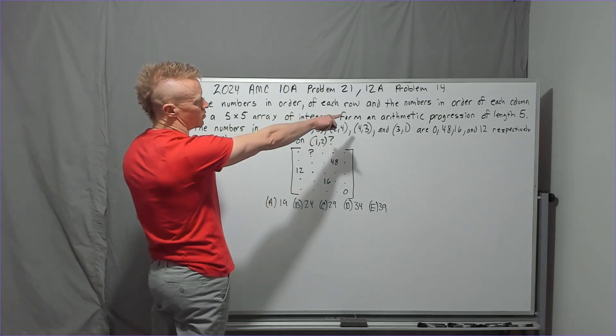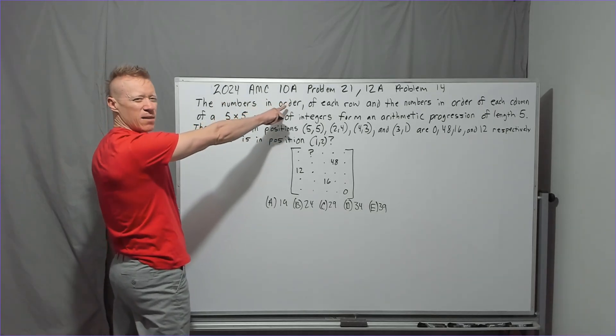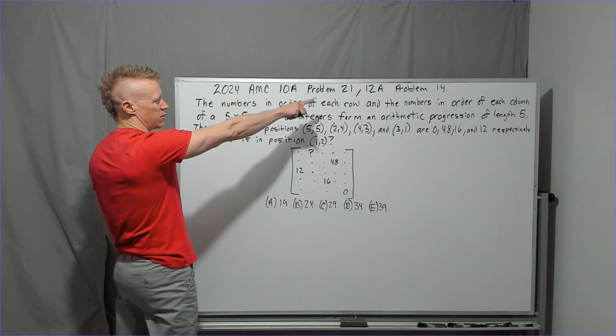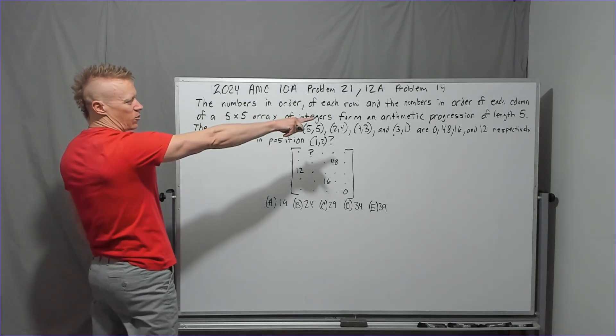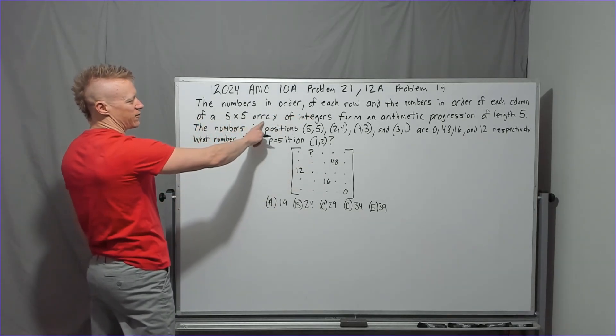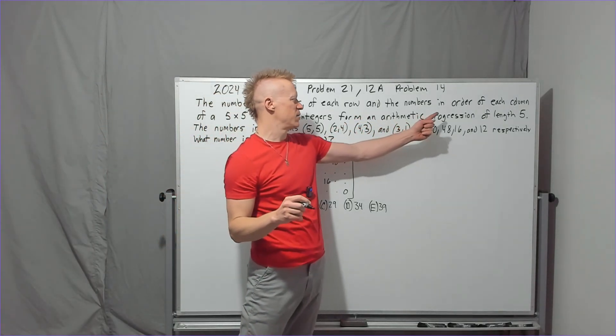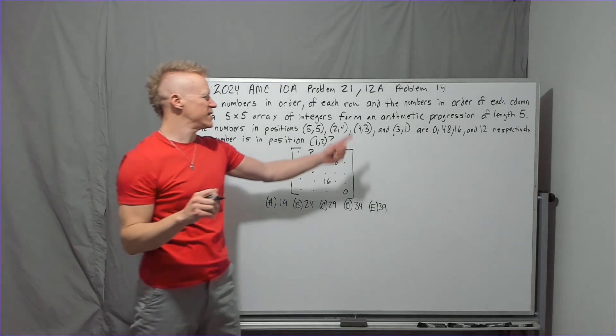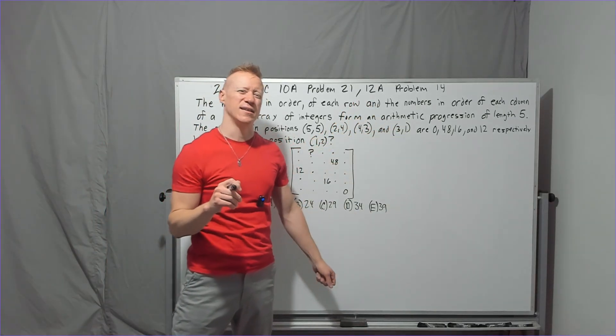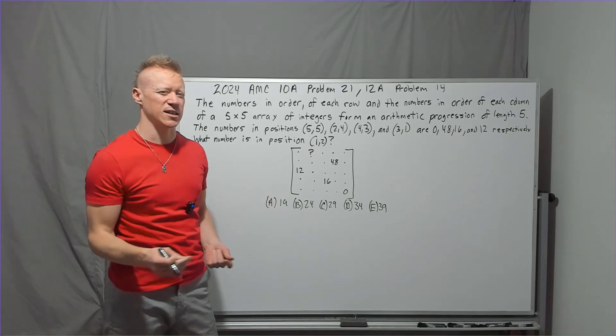The numbers in order of each row and the numbers in order of each column. This is the ICA problem 21, 2024, and the 12A problem 14. In order of each column of a five by five array of integers form an arithmetic progression of length five. Interesting note,